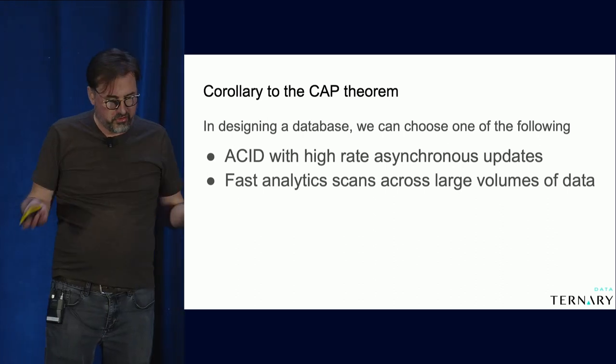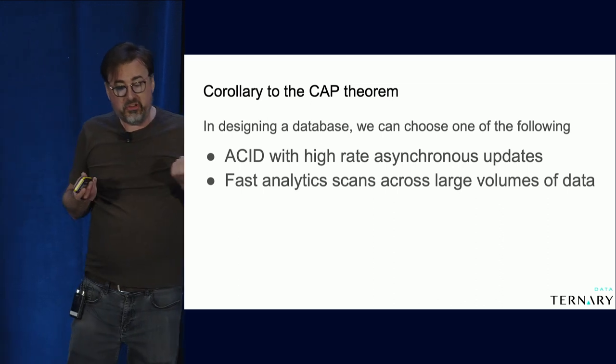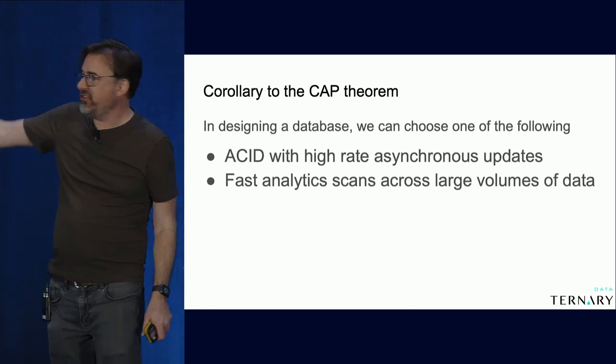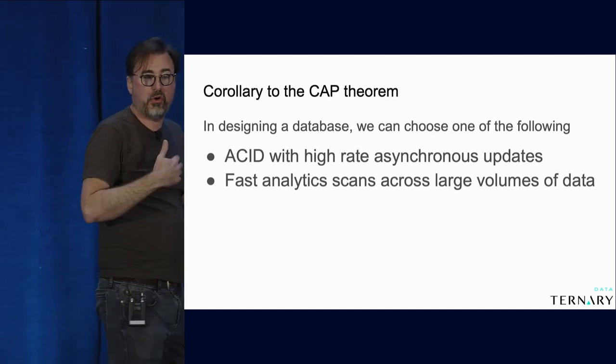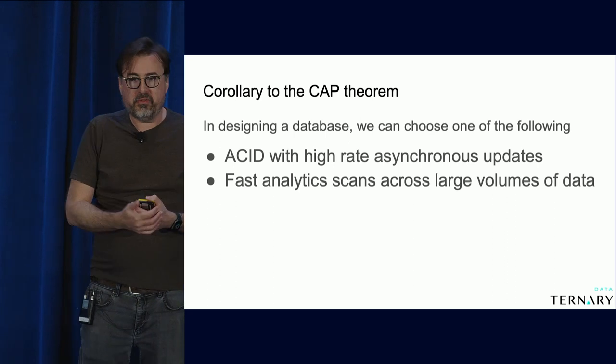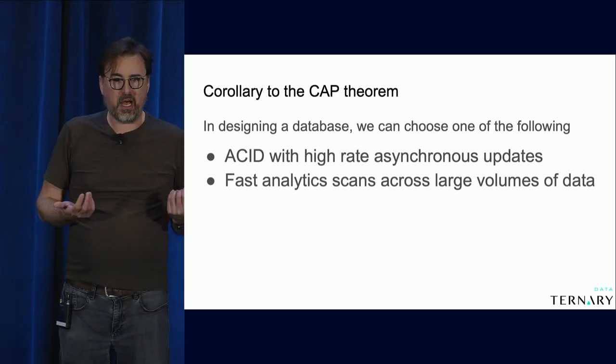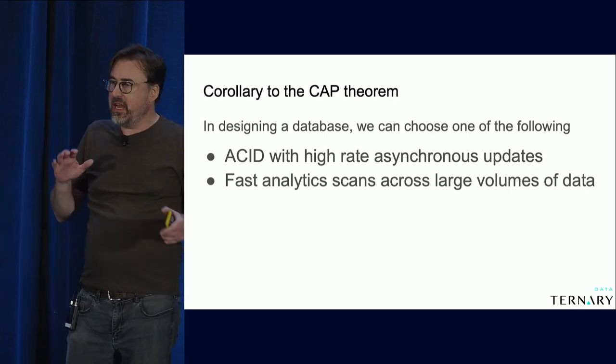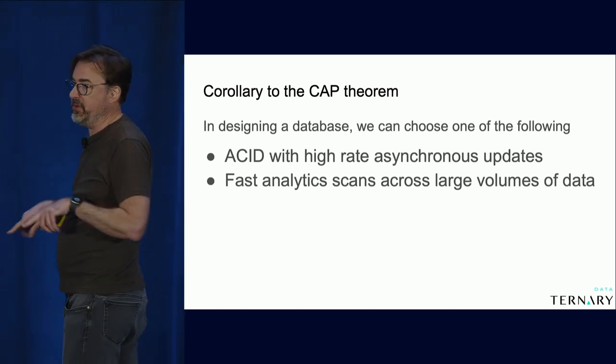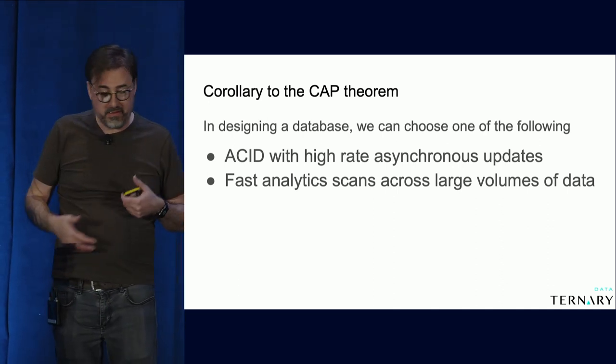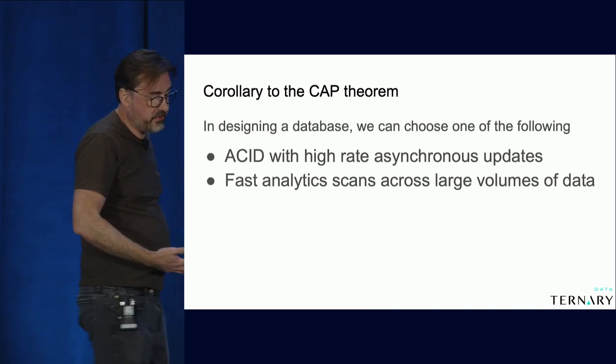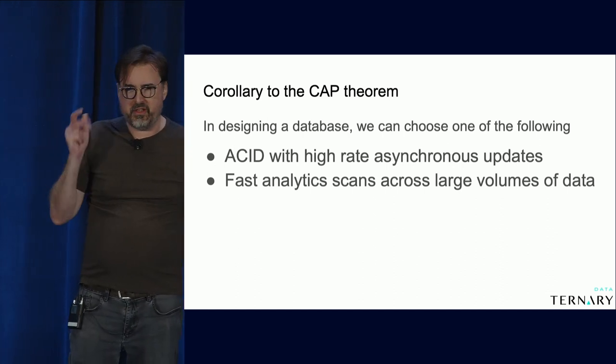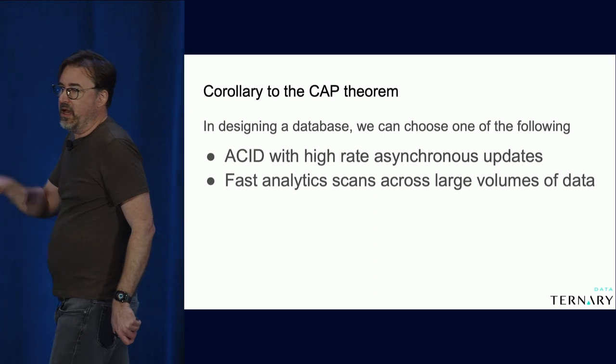In designing a database or distributed data store, we could choose one of the following. I can either have an ACID database with high-rate asynchronous updates. Think of Postgres in a typical mode backing an application, say a bank account application, where I need absolute consistency, I need transactions, I need to make sure that two people don't withdraw money from an account at the same time and overdraw it. These are characteristics that an ACID database will give me, and typically you can have thousands of transactions per second.